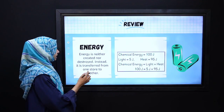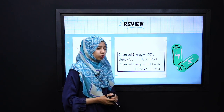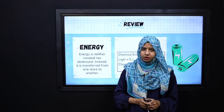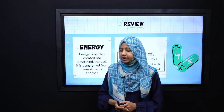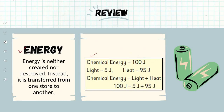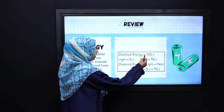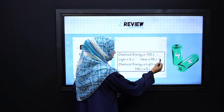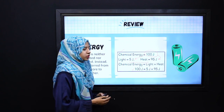So next, we will summarize our lesson. In today's lesson, we have discussed the law of conservation of energy — that it can neither be created nor be destroyed; it can only transform from one form to another. We discussed that if we have chemical energy of 100 joules, it converts into light energy and heat energy: 5 joules is possessed by light energy whereas 95 joules is possessed by heat energy, and collectively the overall sum equals 100 joules.